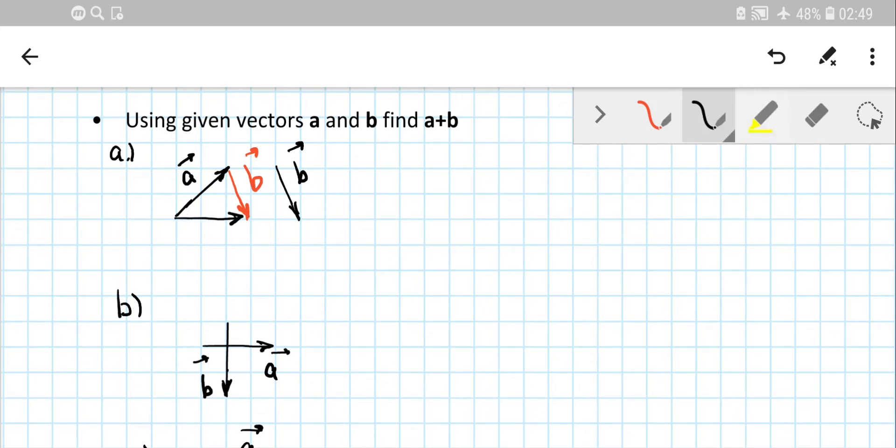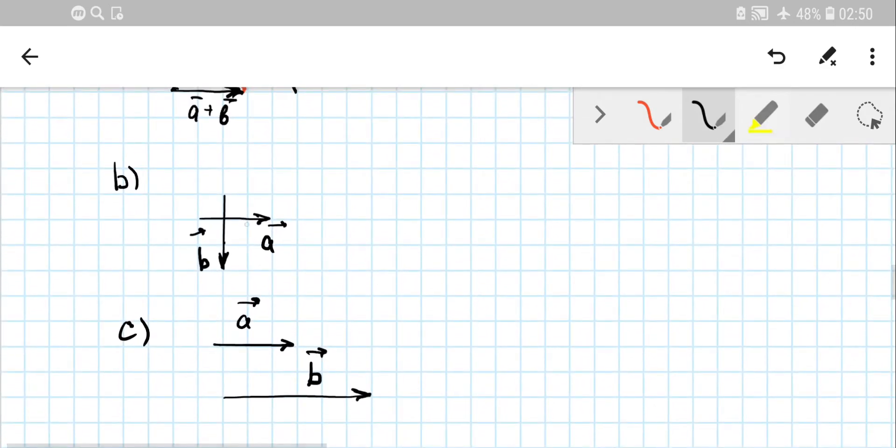Here we go, we've got the resulting vector which goes this way - that represents a plus b. Hope you understand that. The length of this vector, by the way, is three cells.